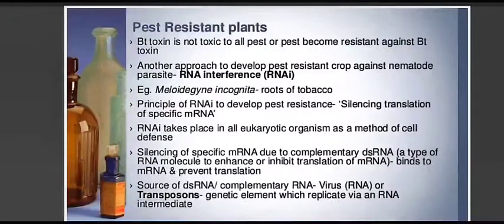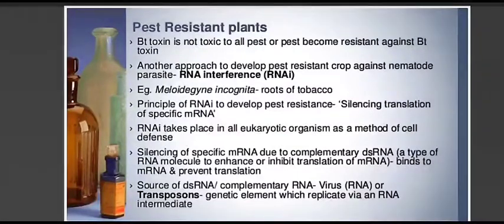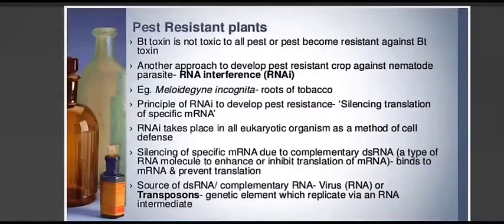In this approach, pest resistance is developed in the plant. We will study this by taking the example of a nematode roundworm whose name is Meloidogyne incognita, which causes a disease called root knot disease in the roots of tobacco. The RNA interference technique is used to develop pest resistance by silencing the translation of specific mRNA. RNA interference actually takes place in all eukaryotic organisms as a method of cell defense.